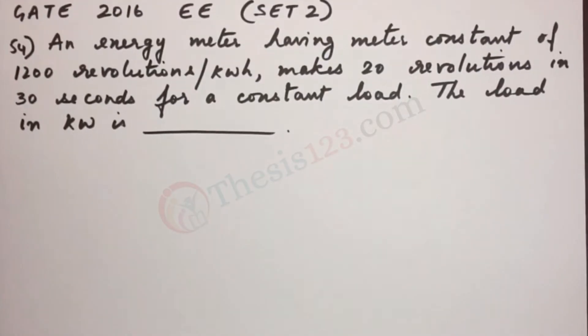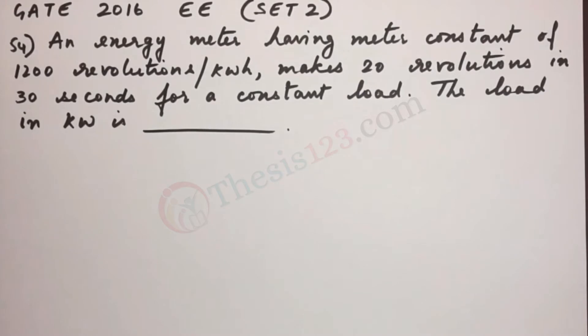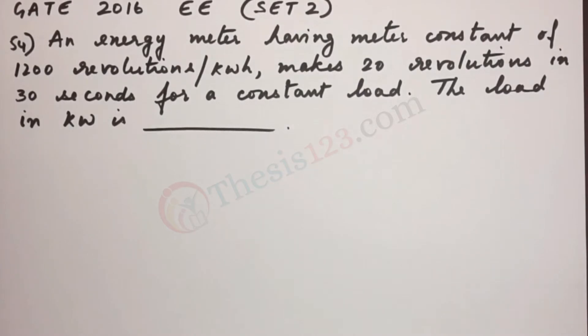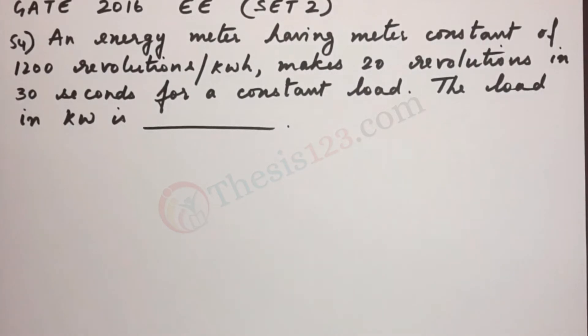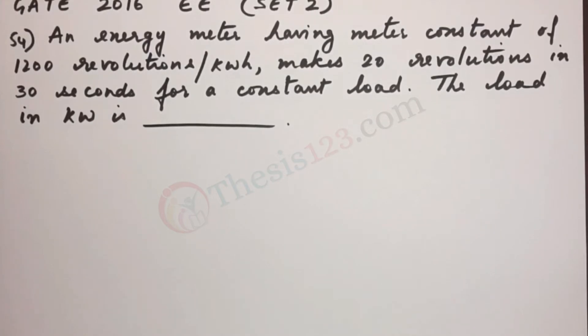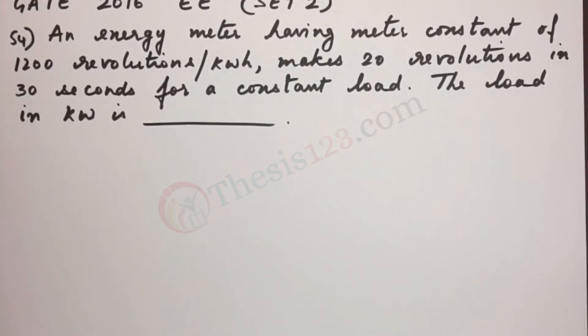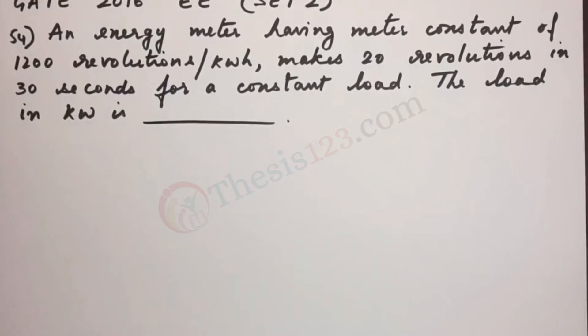Here's the next question number 54. An energy meter having meter constant of 1200 revolutions per kilowatt hour makes 20 revolutions in 30 seconds for a constant load. The load in kilowatts is dash.